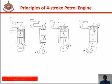Principles of the four-stroke petrol engine: the first stroke is called the intake stroke. The inlet valve opens to allow the mixture of fuel and air to enter into the vacuum in the cylinder. The piston is pushed downwards from the top dead center to the bottom dead center. It should be noted that the outlet or exhaust valve remains closed during this stroke.